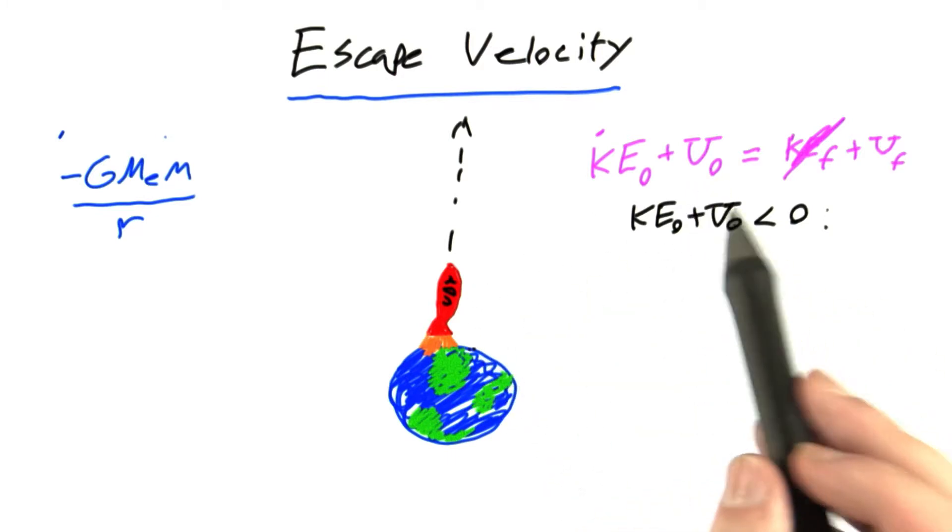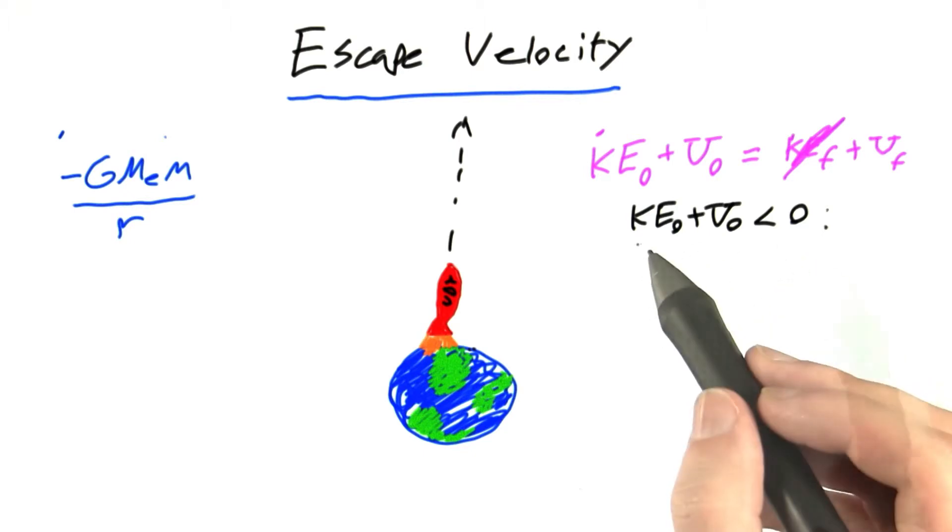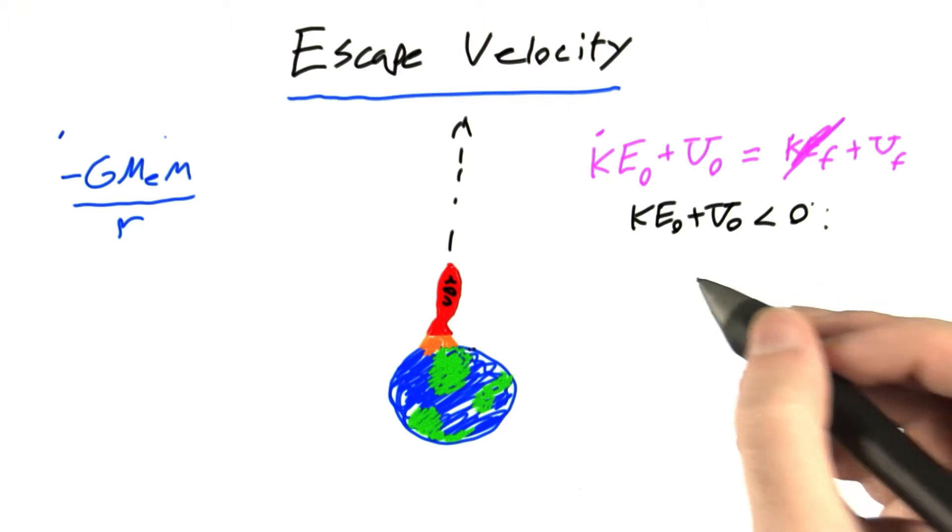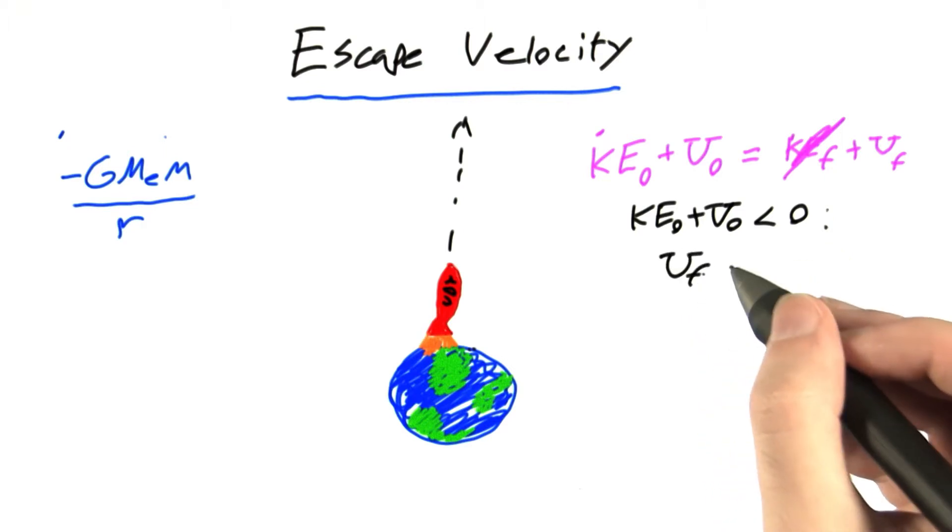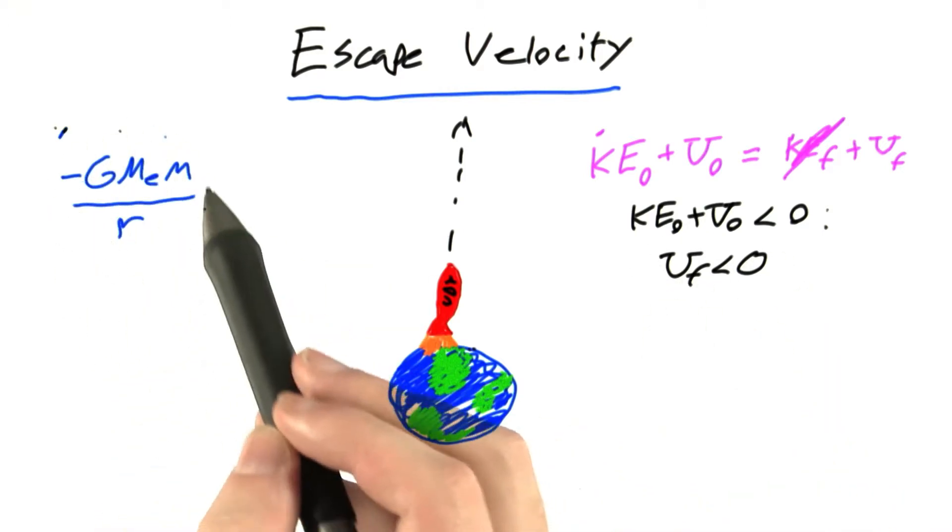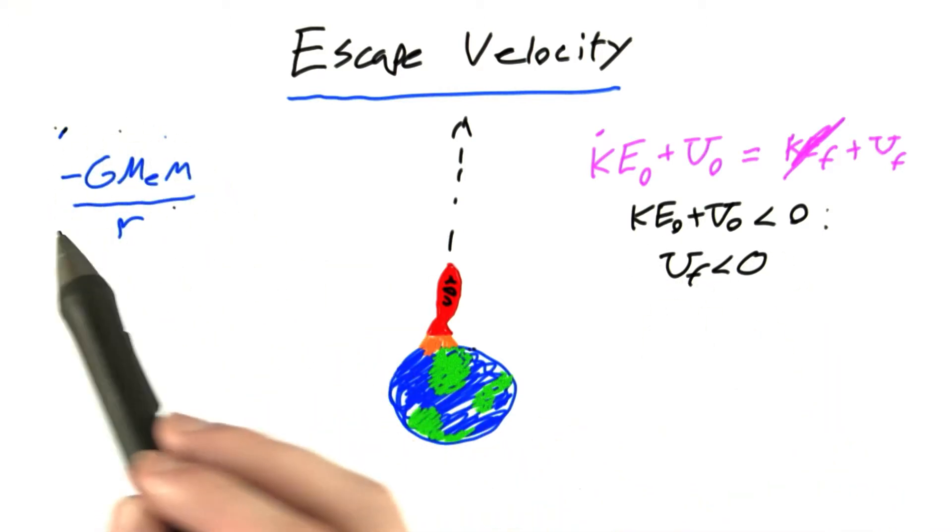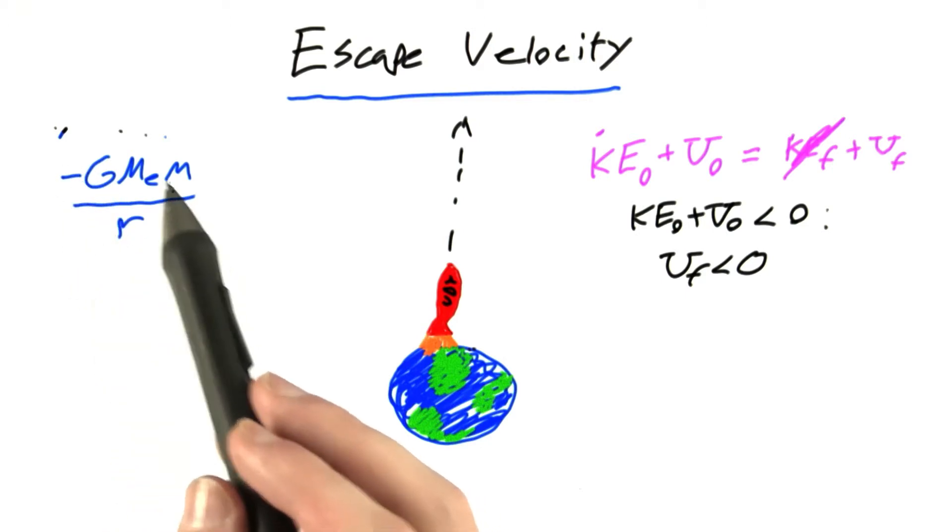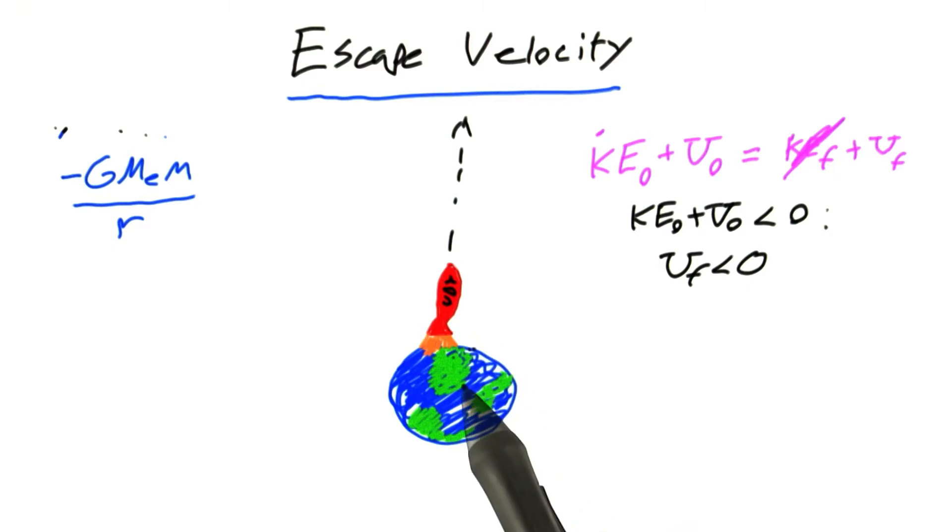First, I want to consider the case where the sum is less than zero. So if the kinetic energy plus the original potential energy is less than zero, then we know that the final potential energy must also be less than zero. And this is great because if we look at our general formula for gravitational potential energy, we see that the value is always negative because of this negative sign up front. So we should be easily able to solve for r, the distance the rocket is away from the Earth, when its speed finally reaches zero.